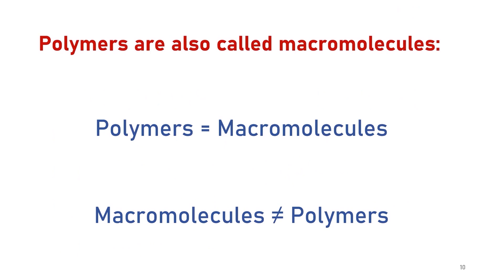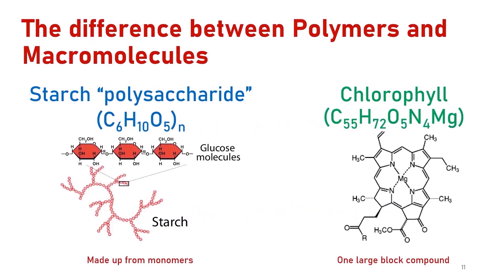Polymers are also called macromolecules due to their large size and high molecular weight. All polymers are considered to be macromolecules, but not all macromolecules are considered to be polymers. All polymers are made of small monomers joined together.